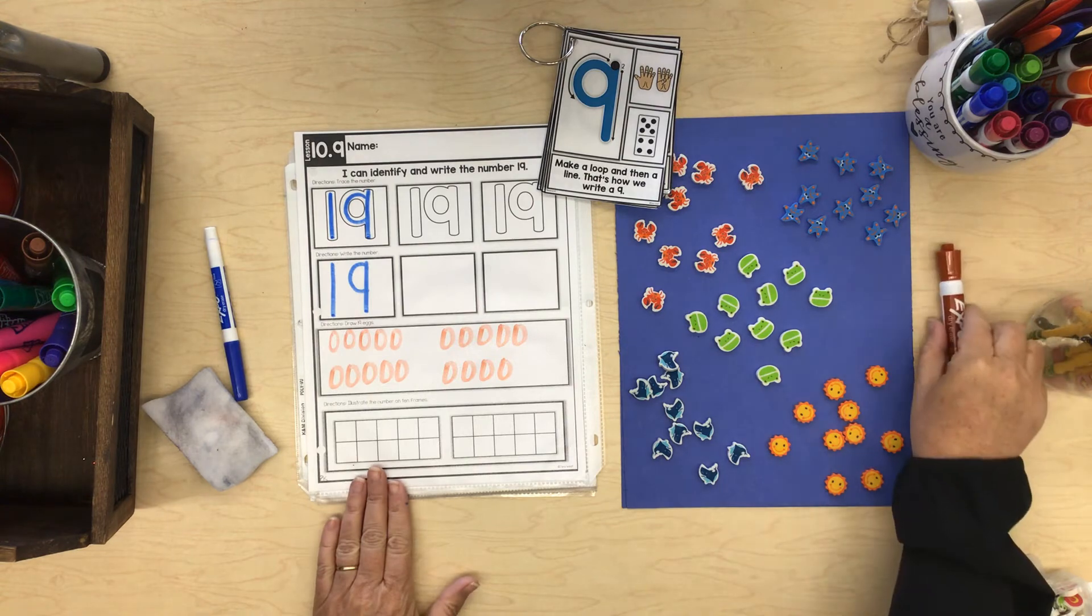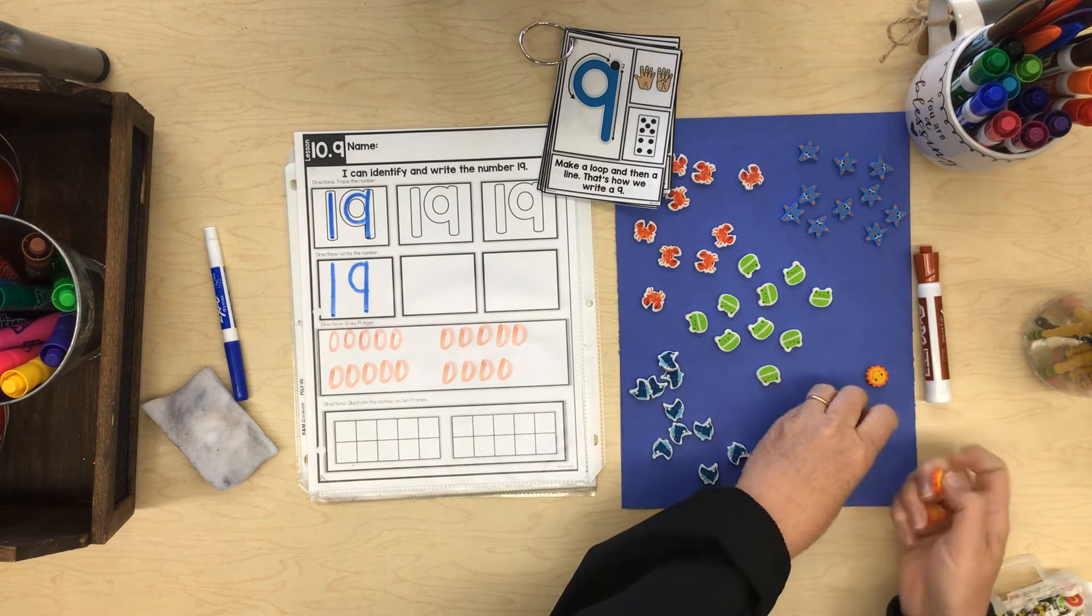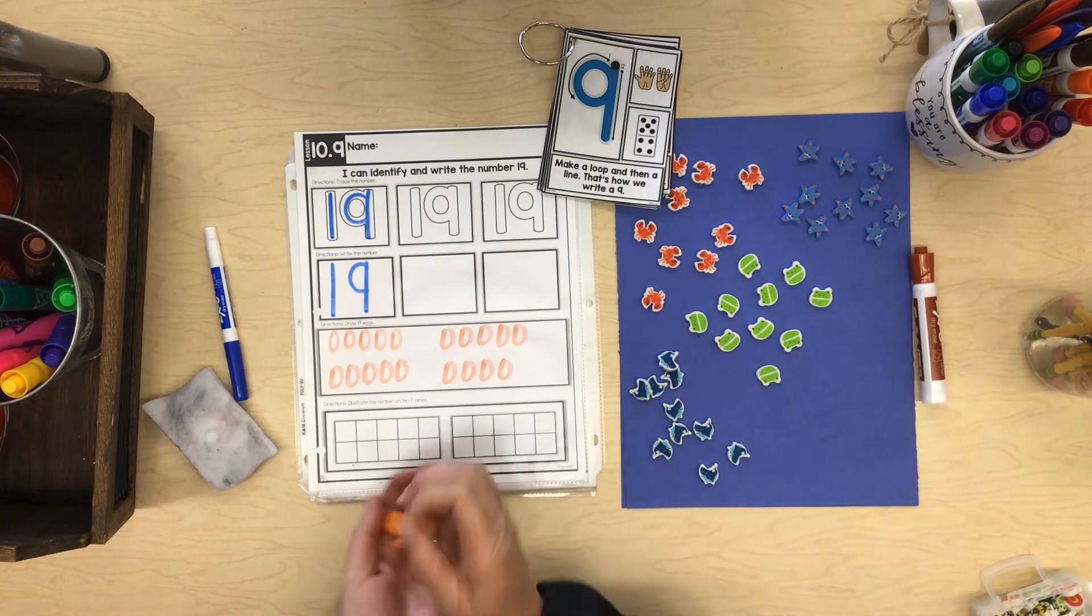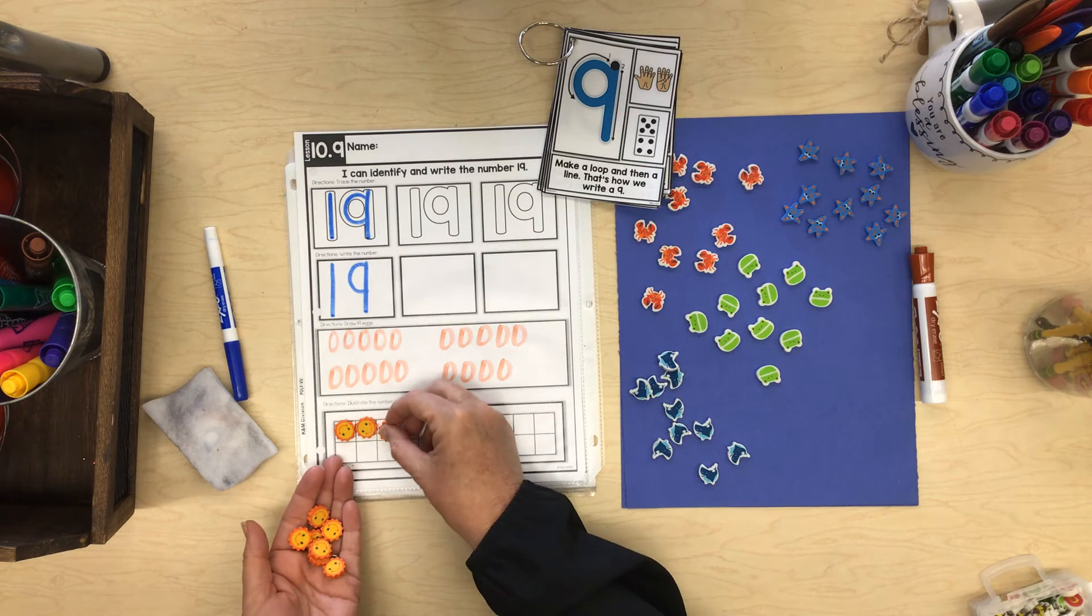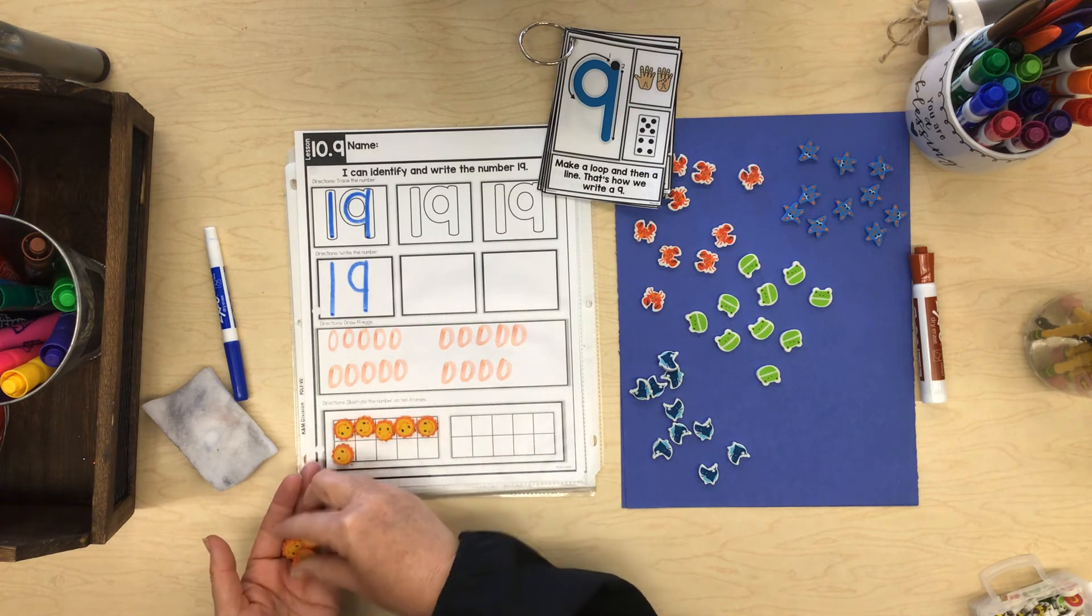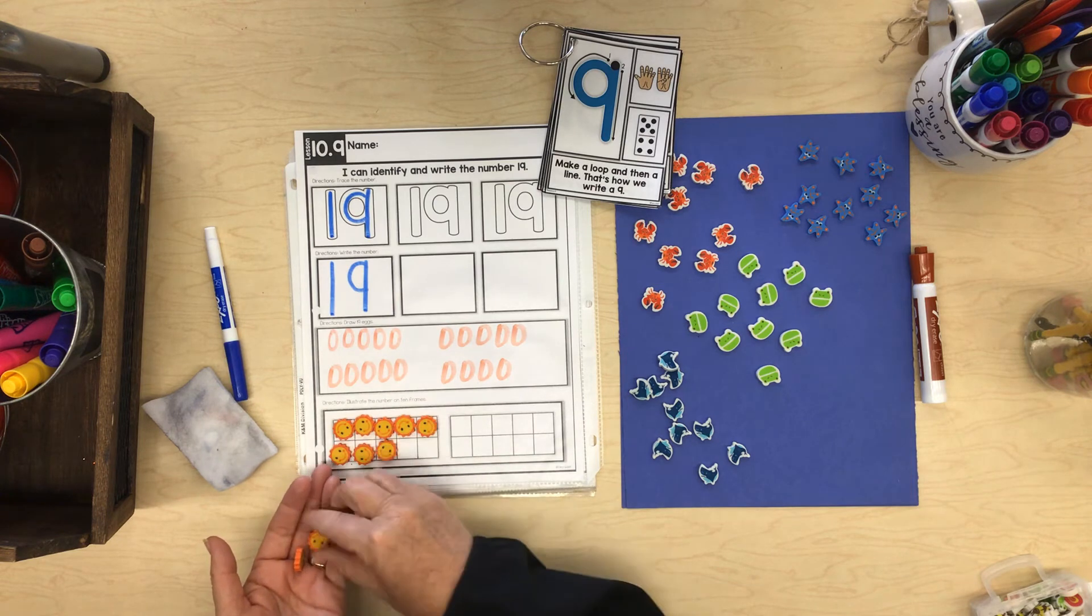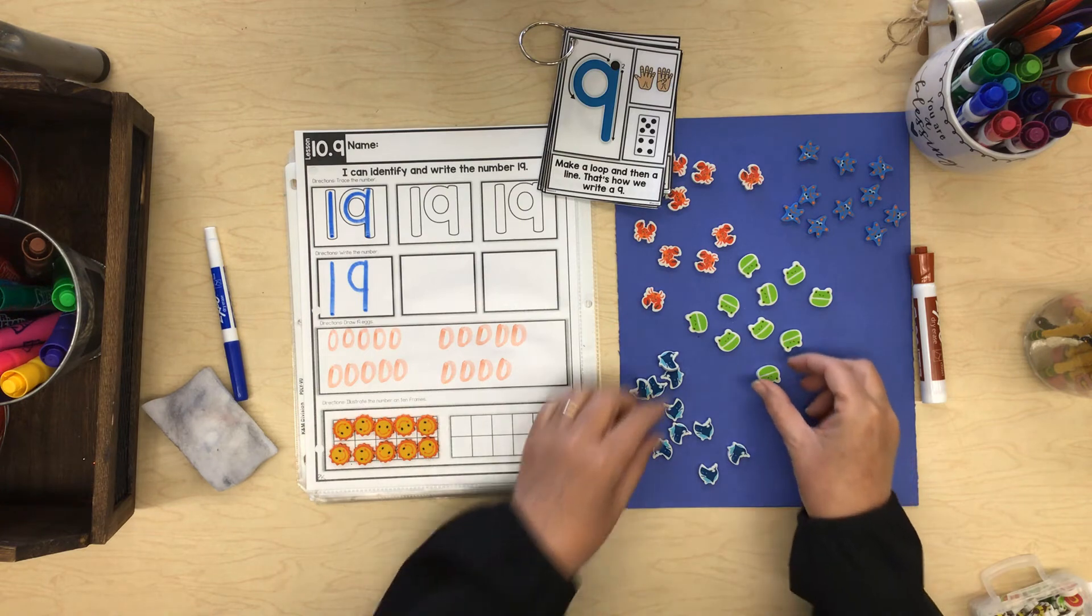Now let's look at 19 in our 10 frame. Ready? I think we'll start with our sunshines. And the first thing we'll do is make our set of 10. 1, 2, 3, 4, 5, 6, 7, 8, 9, 10. We need 9 more.